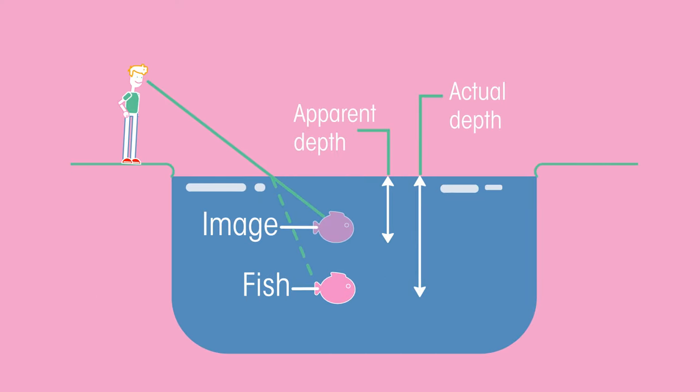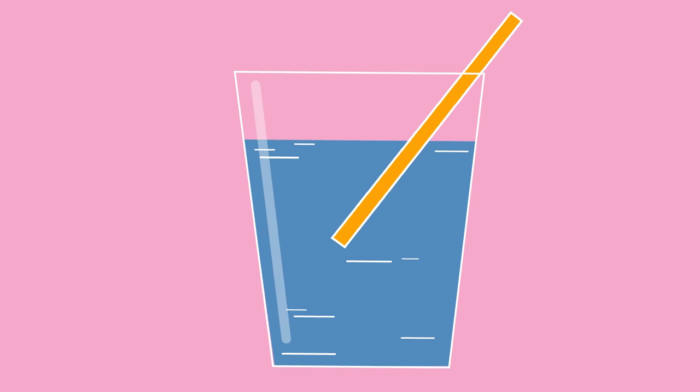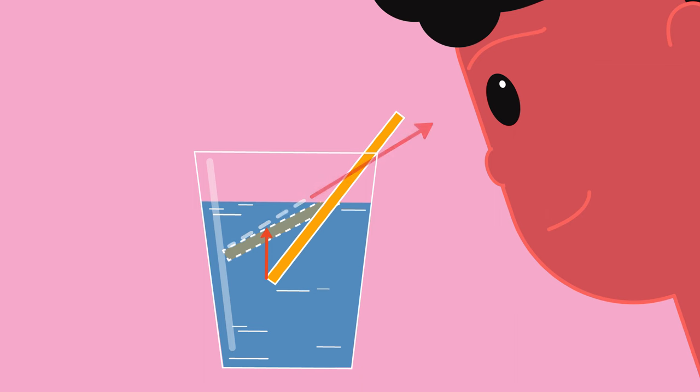Because of refraction water looks shallower than it really is and a straw in a glass of water looks like it bends at the surface. The light ray refracts as it leaves the water making the straw appear bent.